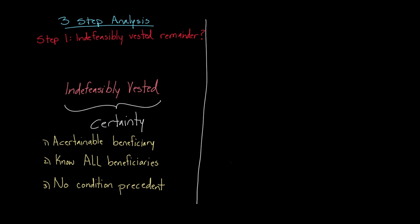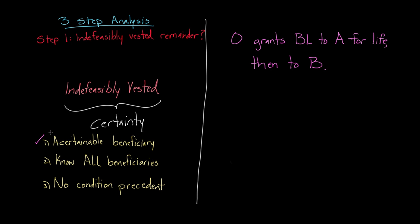Let's start with a simple example: O grants Blackacre to A for life, and then to B. We can see that we have at least one ascertainable beneficiary, B. We also know who all the beneficiaries are — there are no potential future beneficiaries popping up. And finally, there are no unsatisfied condition precedents. So this is unquestionably an indefeasibly vested remainder.